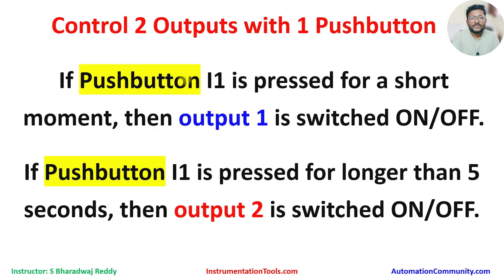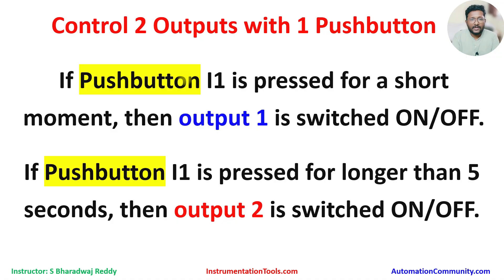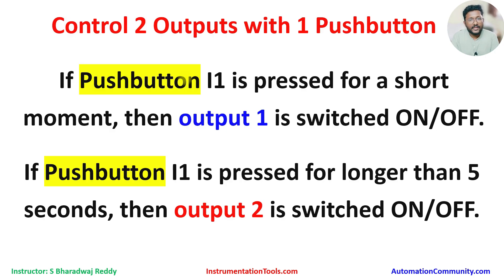In simple terms: if the push button is pressed and released immediately, output one will be controlled. If the push button is pressed and held for five seconds or more, output two will be controlled. The main objective is we have only one push button but we are independently controlling two outputs. The output states depend only on the push button timing — how long it is pressed.